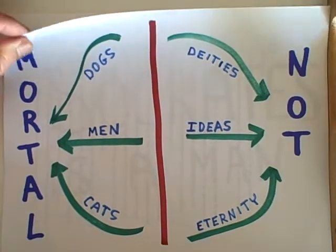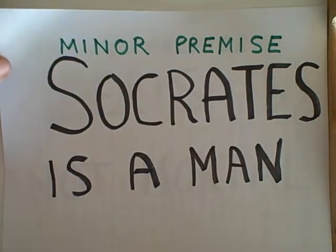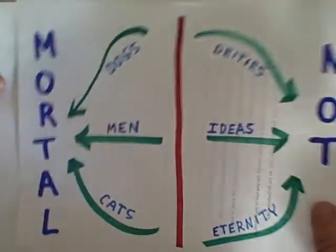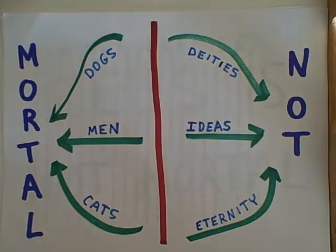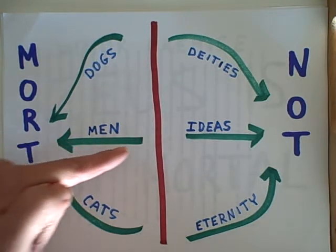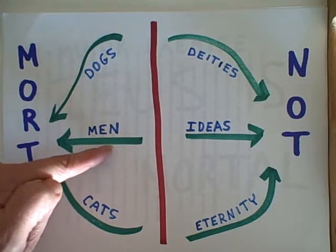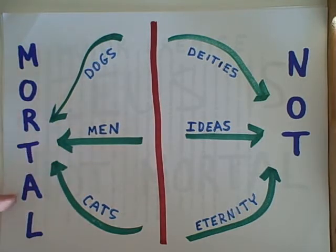Now let's take a look at a minor premise: Socrates is a man. We know that all men are mortal, therefore men are on the pathway to mortality. If Socrates is a man, Socrates also is on that pathway, and Socrates is mortal.